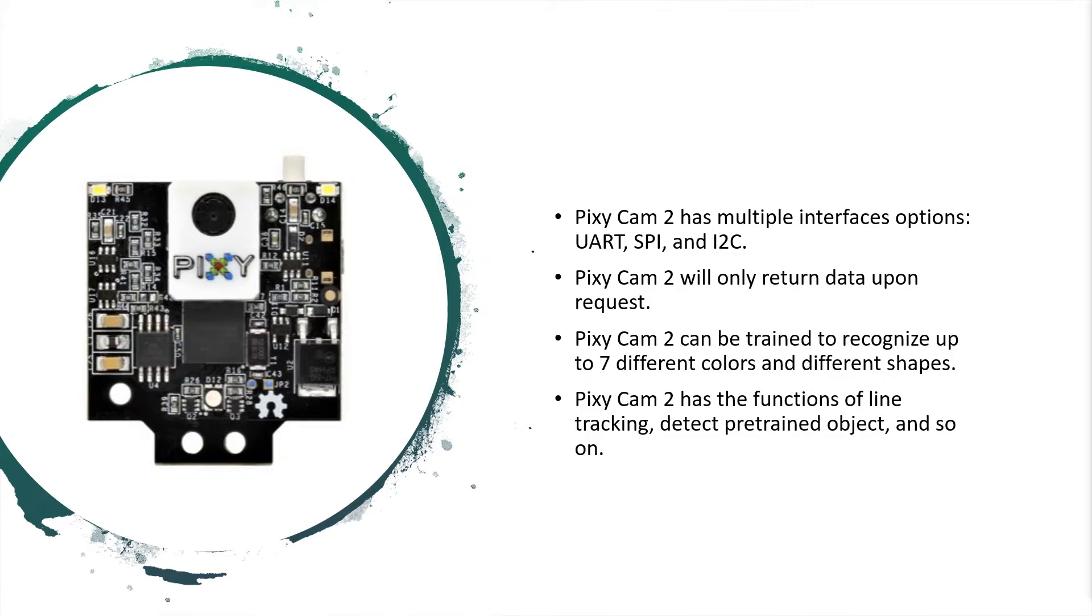Pixie 2's FPS is 60, which means every second I will get information from 60 frames. PixieCam 2 has multiple interface options, such as UART, SPI, and I2C. Instead of constantly sending data, PixieCam 2 will only return data upon request. PixieCam 2 also has a software that allows users to adjust camera settings and label signatures. It also has a powerful function to allow users to train it to recognize an object. The accuracy will increase by a large amount when using training instead of just labeling. PixieCam 2 also has other functions such as line following, object tracking, and so on.